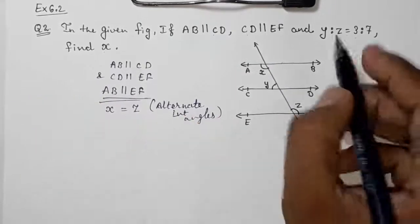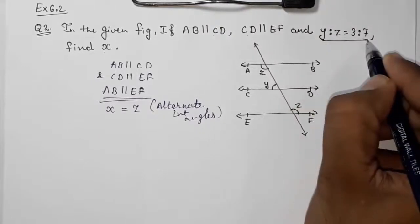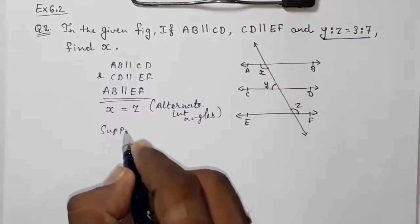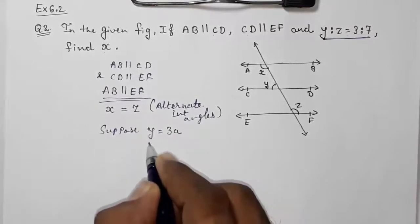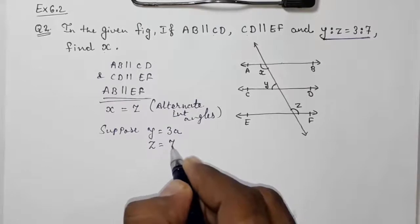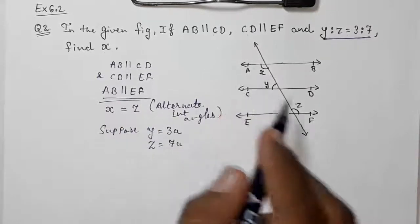They had given us the ratio of Y to Z, so suppose Y is equal to 3A and Z is equal to 7A. I'm not taking X because they actually had given X in ratio.